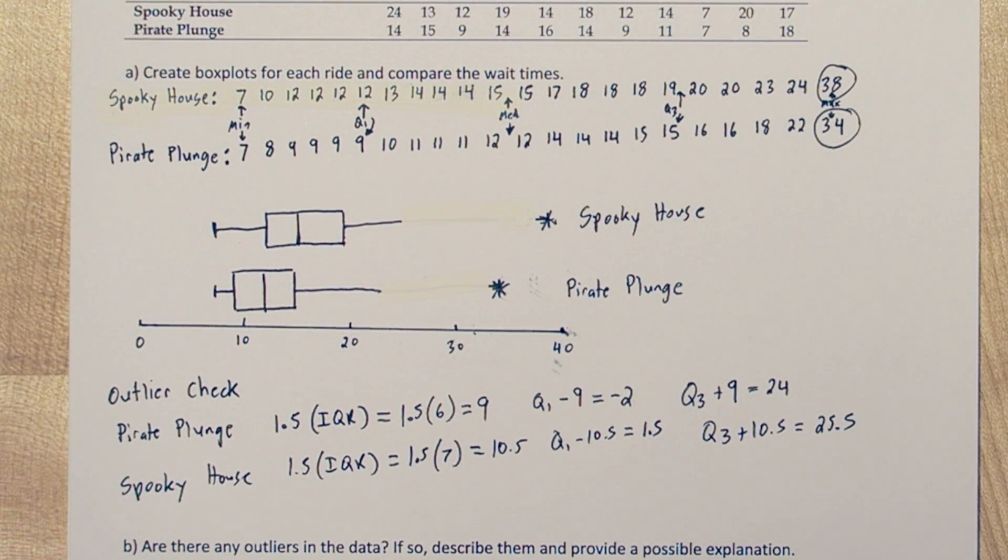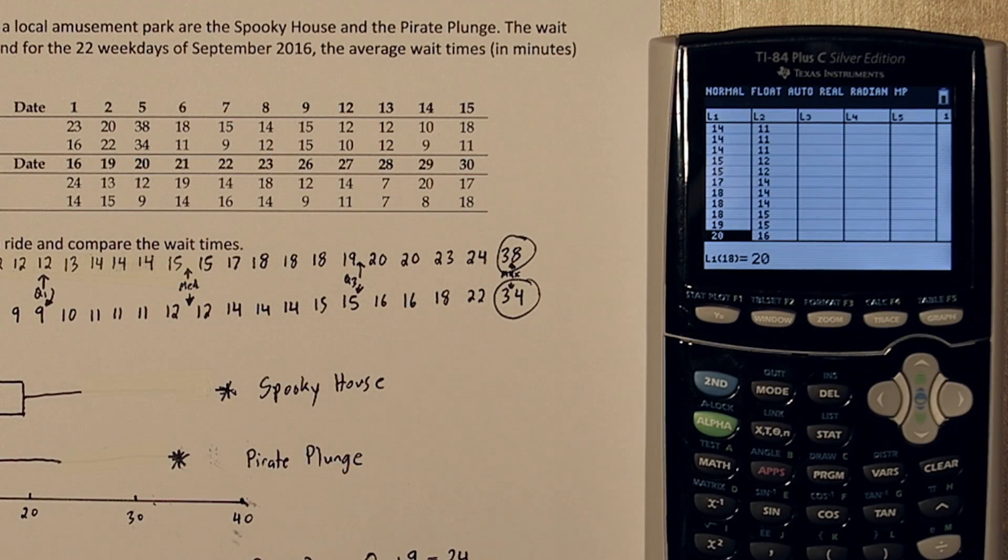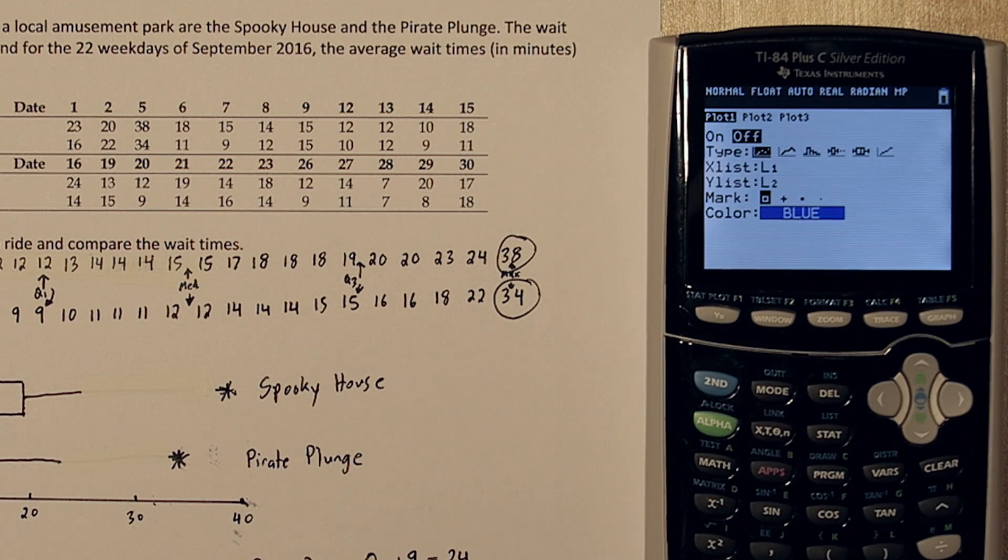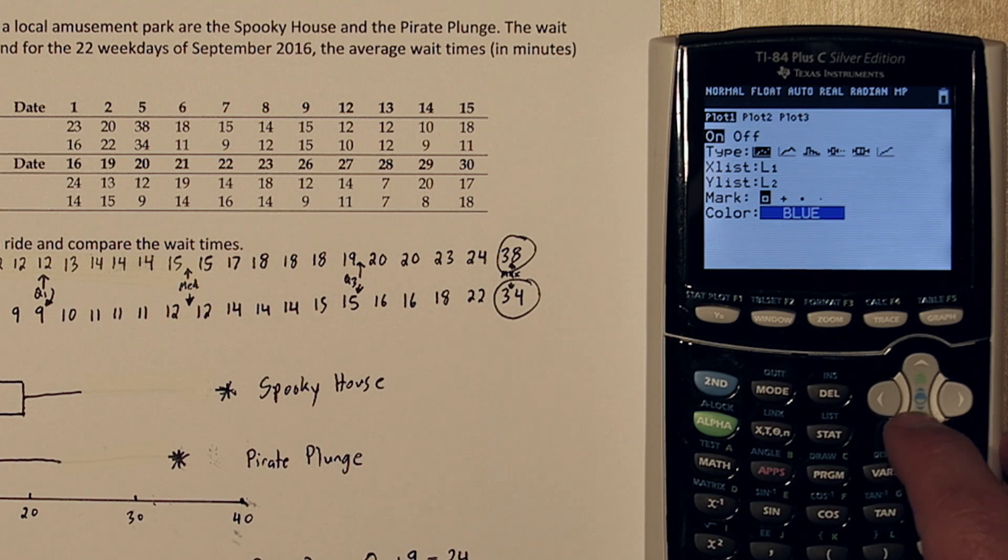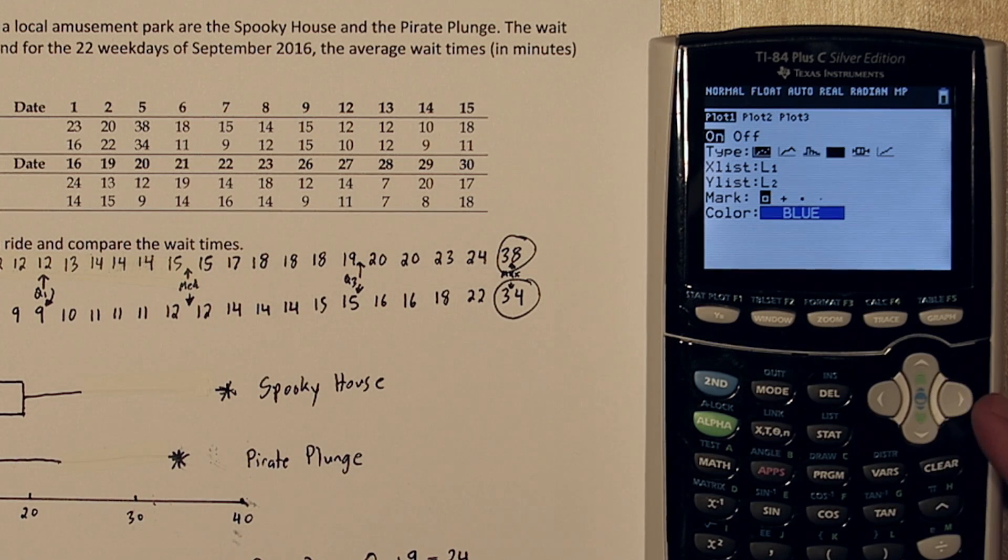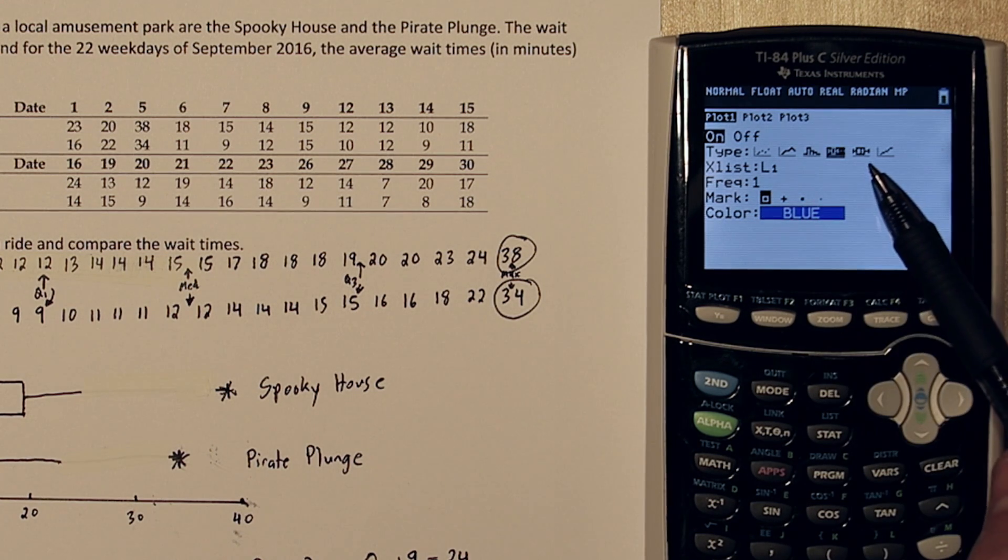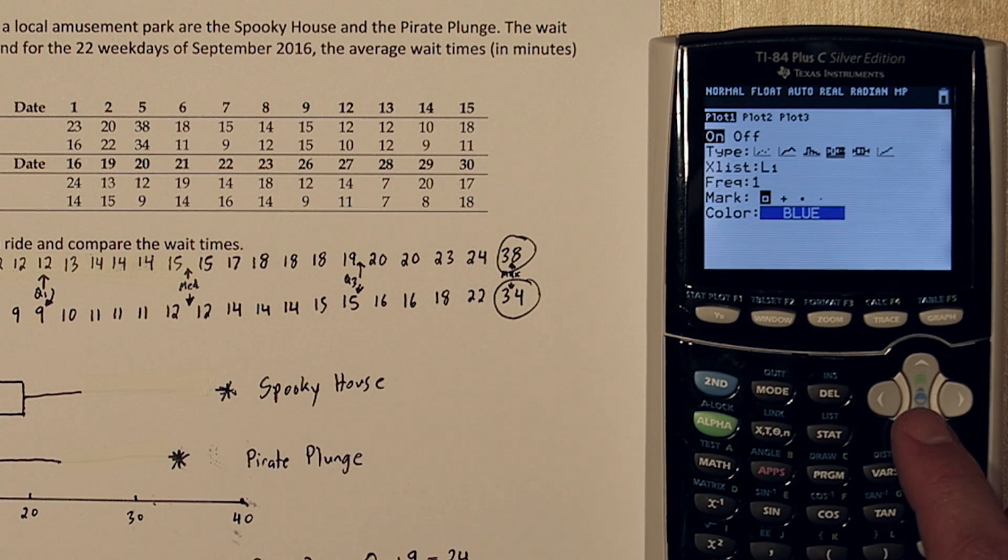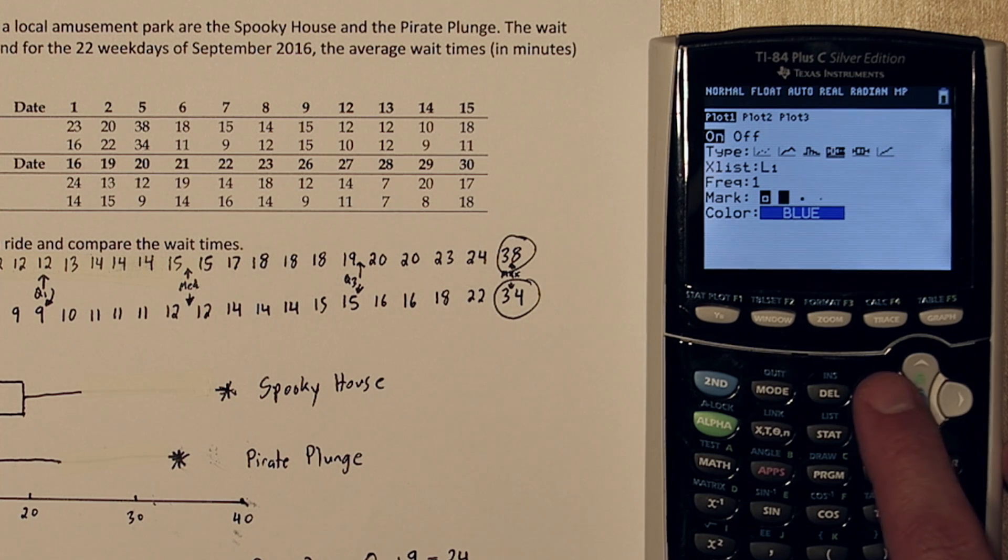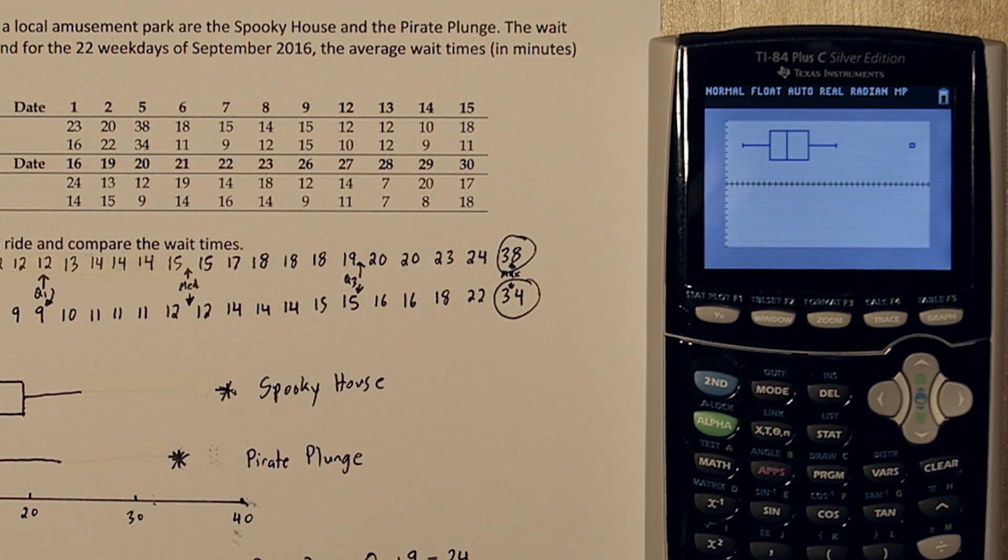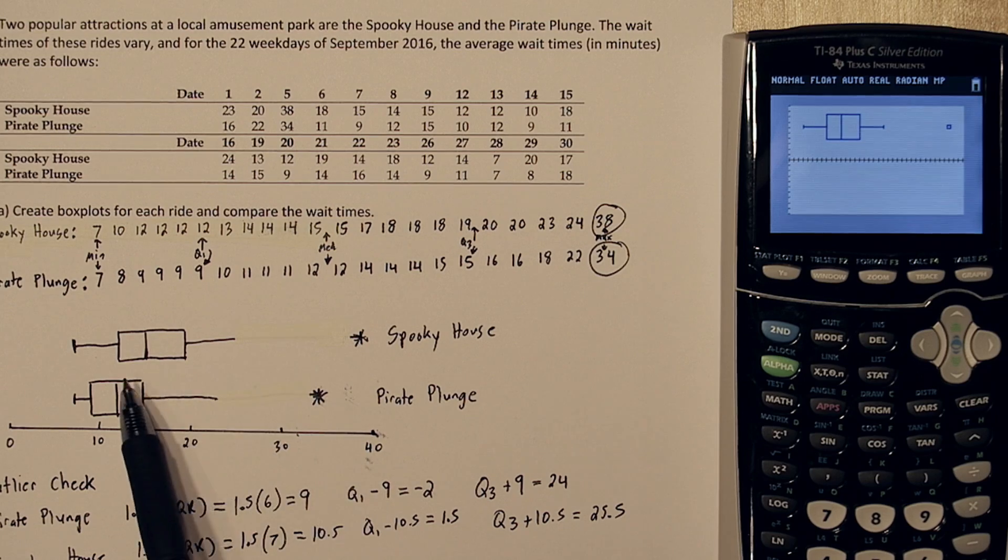Before we move on to Part B, let me show you how to do this on the calculator. We've already input the data into List 1 and List 2. If you press 2nd and Y equals, you get to the stat plot menu. Let's push enter on the first one. We're going to turn the plot on, and we're going to go over to this fourth option right here. You actually have two box plot options. The first one's a modified box plot, and the second one's a regular box plot. So, it says, what do you want to make your box plot with? List 1, so we'll leave that. How many times do you want to use List 1? Just once, so leave that as a 1. And you can actually choose which mark for your outliers. We'll just leave it at the default. Now when I press Zoom and 9, I have my box plot. And that actually matches the Spooky House box plot right here.